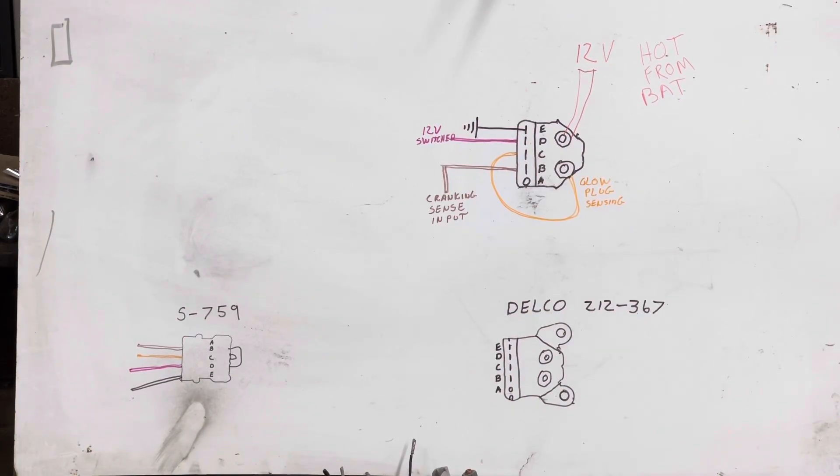Since my writing is not exactly the best, the plug is an S-759 plug. You Google that, you will find this plug. When I first started messing with these things 10, 12 years ago they were $20, now they're like darn near $80. The actual glow plug controller, it's a Delco 212-367. They were in the $50 range when I started messing, now they're in the $120 range.